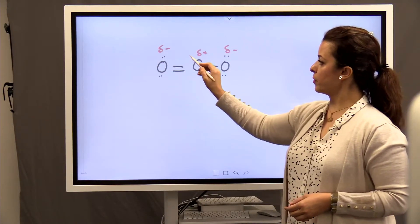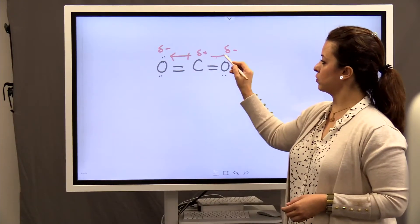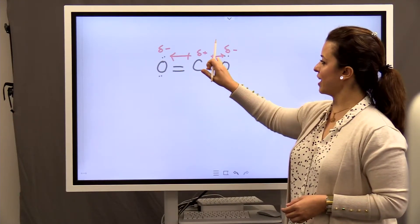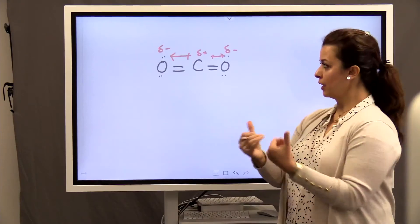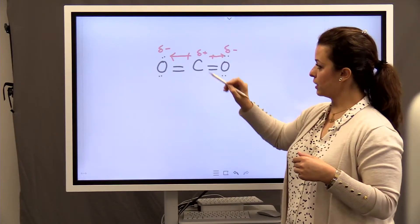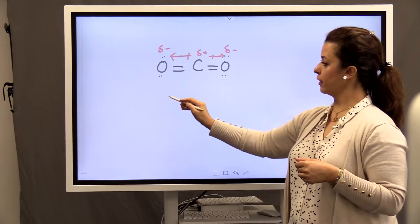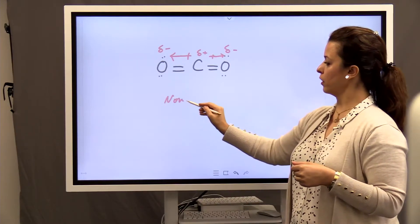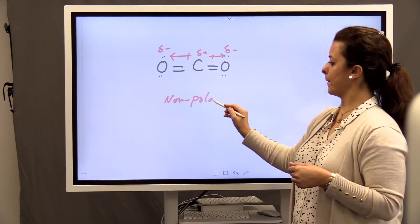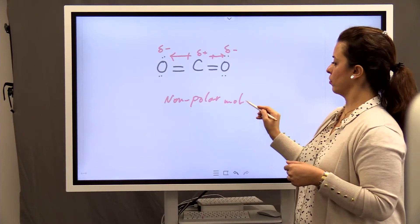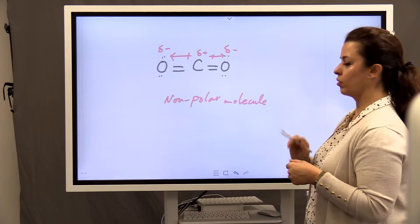So in each carbon-oxygen bond, dipole moment is towards oxygen. Again, the molecule is symmetrical. The two vectors on two opposite sides are the same strength. So it shows a nonpolar molecule, right?